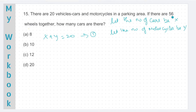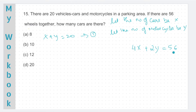It is given that totally there are 56 wheels. How many wheels does one car have? Four. So x cars will have 4x wheels. Similarly, how many wheels does a motorcycle have? Two. So y motorcycles will have 2y wheels. This is the total number of wheels that x cars and y motorcycles will have: 4x plus 2y, which is given as 56. Let us divide this entire equation by 2 to simplify it. Two x plus y is equal to 28. This will be our second equation.